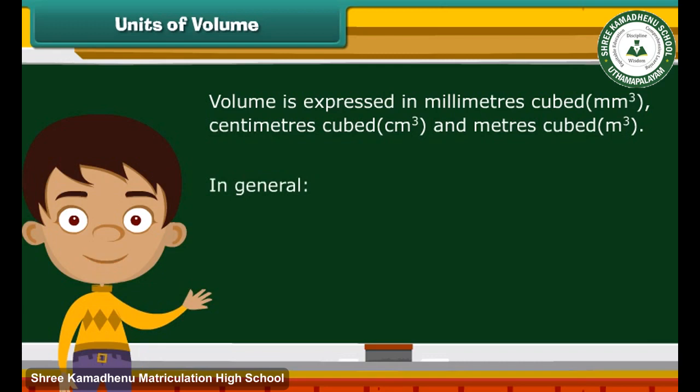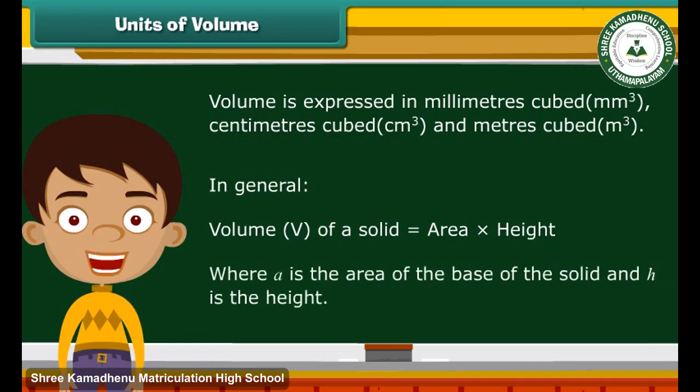In general, the volume V of a solid is given by area of the base into height. Where A is the area of the base of the solid and H is the height. Let's learn about the volumes of different objects.